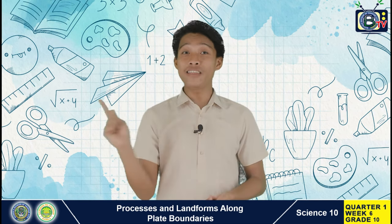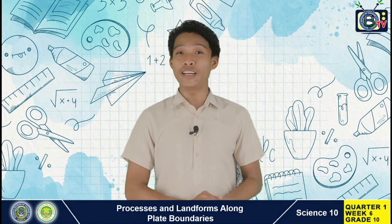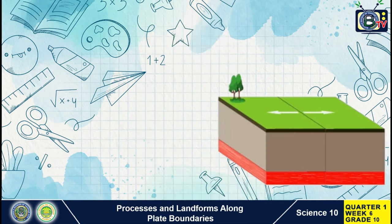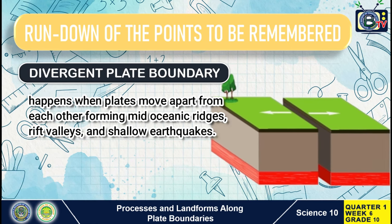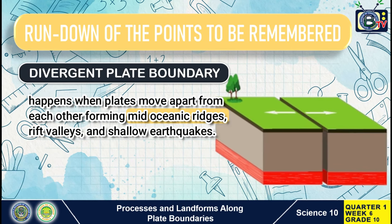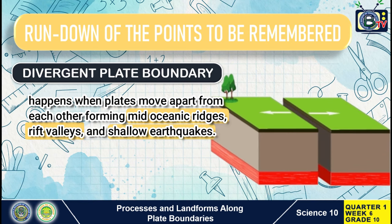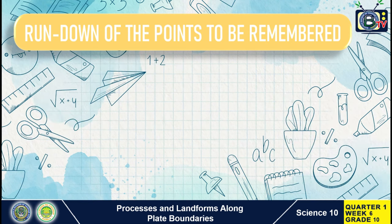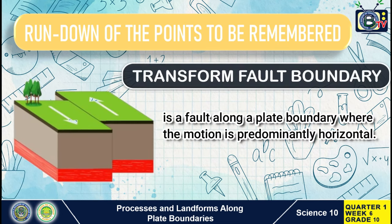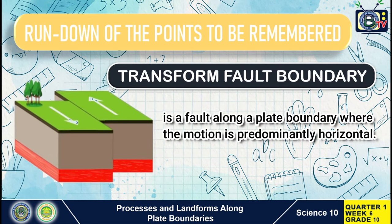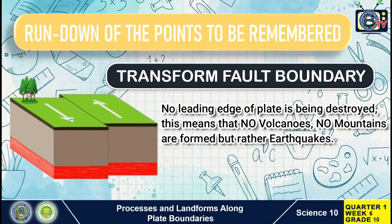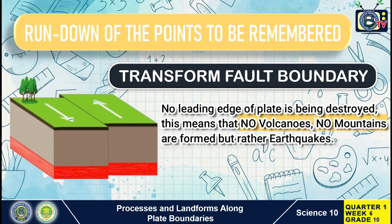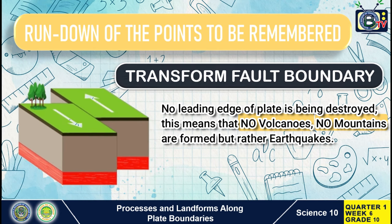Let's have the rundown of the key points from today's discussion. First, divergent plate boundary happens when plates move apart from each other, forming mid-oceanic ridges, rift valleys, and shallow earthquakes. Second, transform-fault plate boundary is a fault along a plate boundary where the motion is predominantly horizontal. No leading edge of a plate is being destroyed, which means no volcanoes and no mountains are formed, but rather earthquakes.